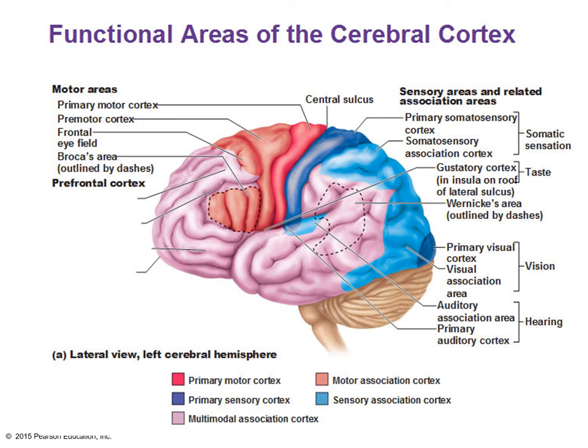Finally, we have the prefrontal cortex. The most anterior portion of the cerebral hemispheres, this area is responsible for complex and abstract intellectual function. One of the main things it does is predicting consequences of action. This actually develops later in life, which is why as we get older we tend to be better at planning for the future.